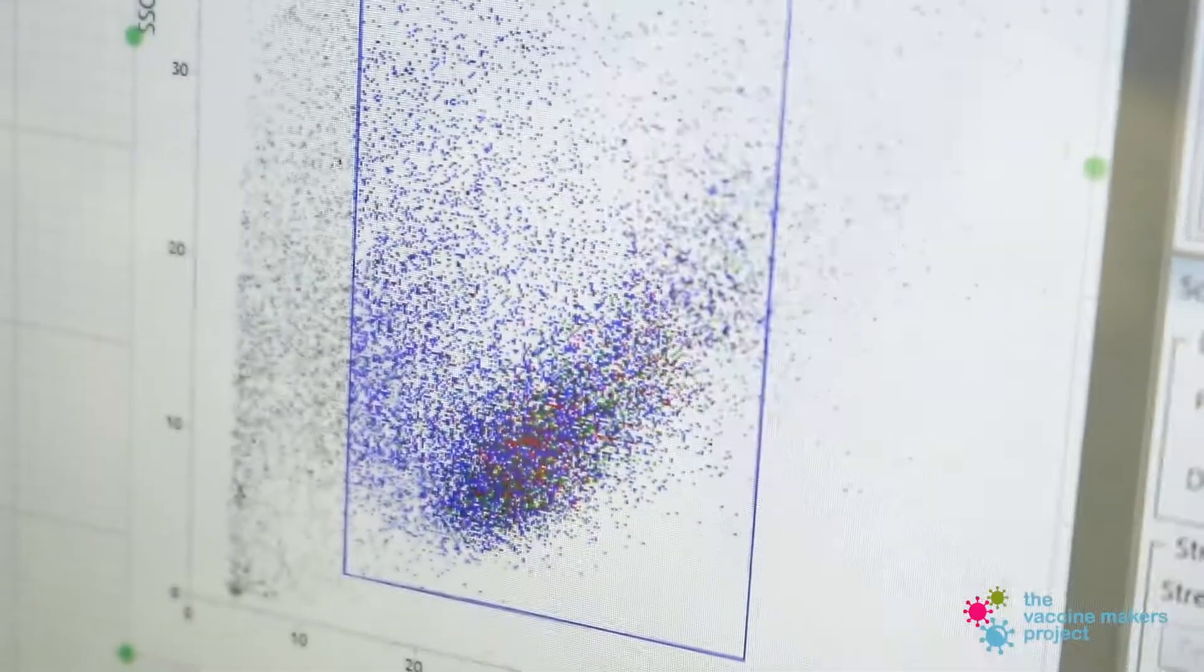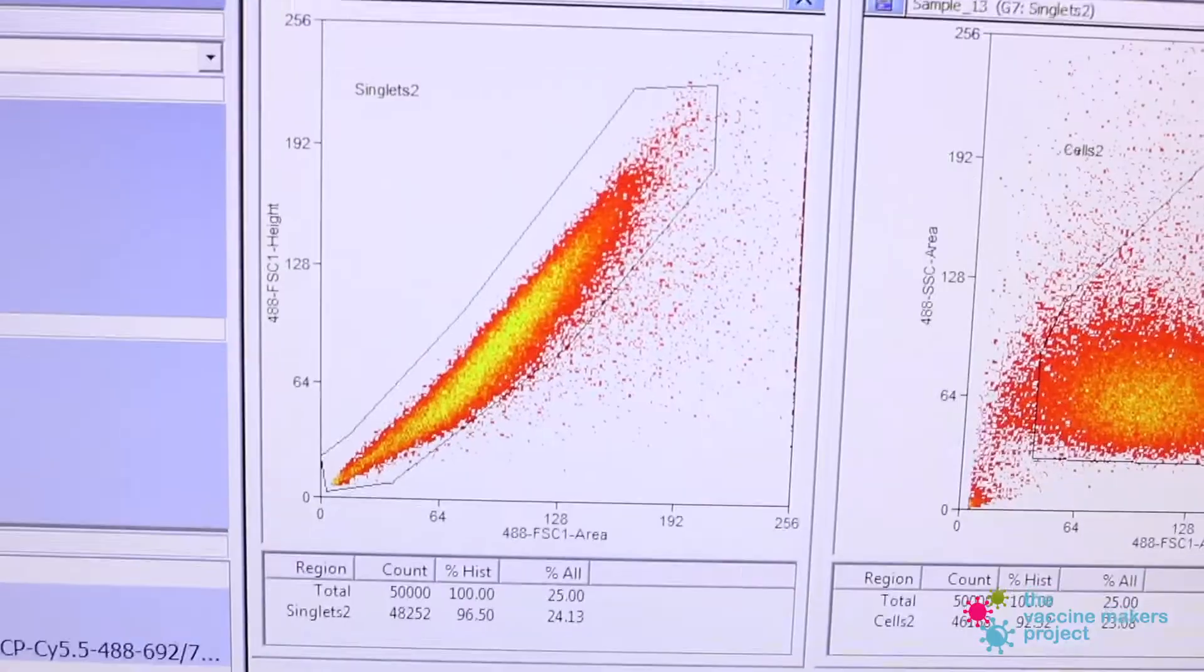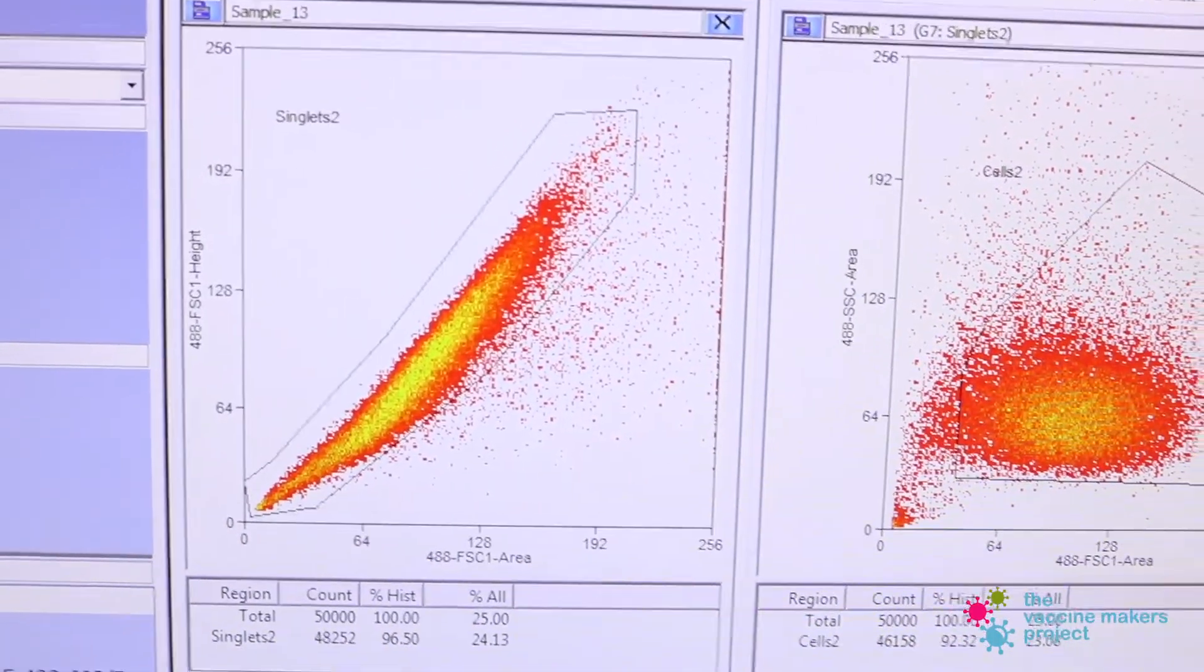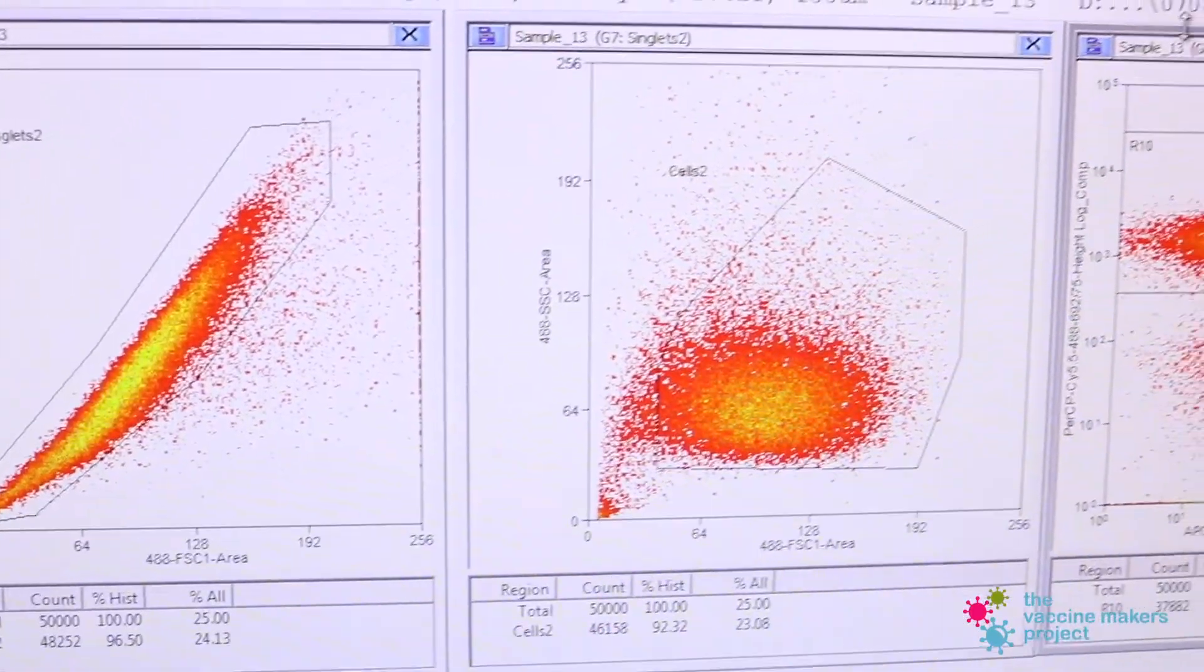The first graph we look at when analyzing data is our forward and side scatter. It gives us a quick overview of what kind of cells may be in there per size and complexity.